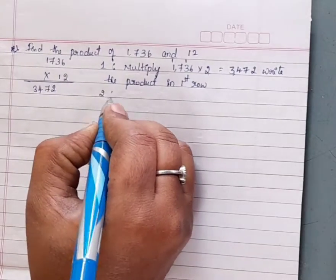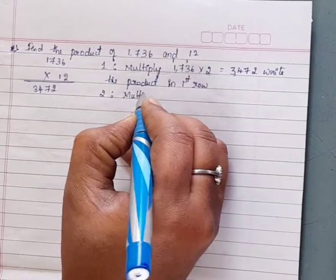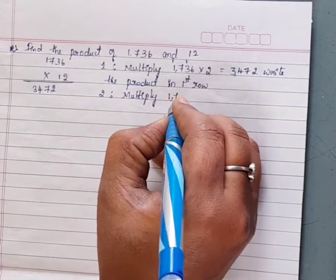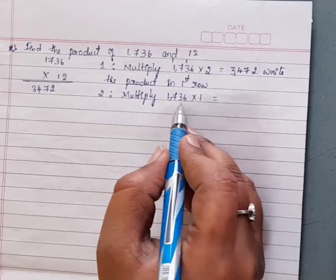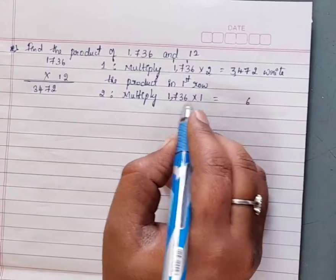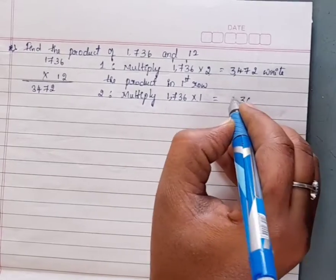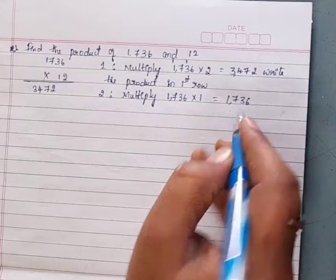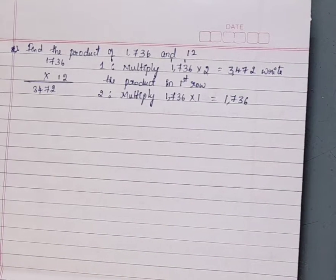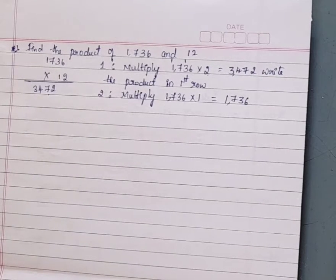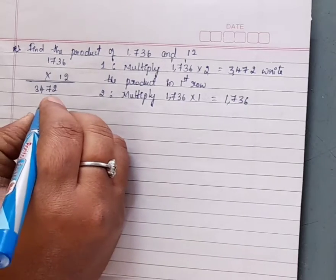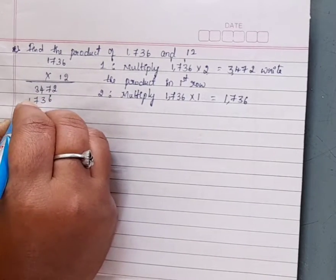Step 2: Multiply 1736 into 1. 1 × 6 = 6, 1 × 3 = 3, 1 × 7 = 7, 1 × 1 = 1. Product is 1736. Write this product in the second row starting from the tens place to the left side.